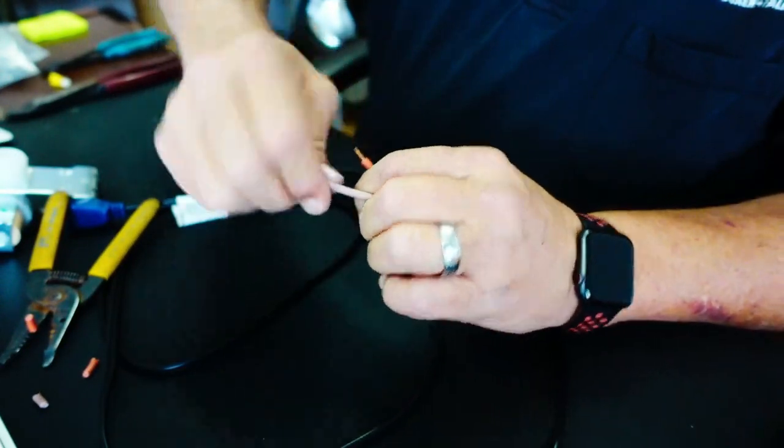All right, so I'm ready to put my molex on, so I'll go ahead and strip these wires back. This molex has got two wires on it - I'm only going to need to use one - and make my connections.